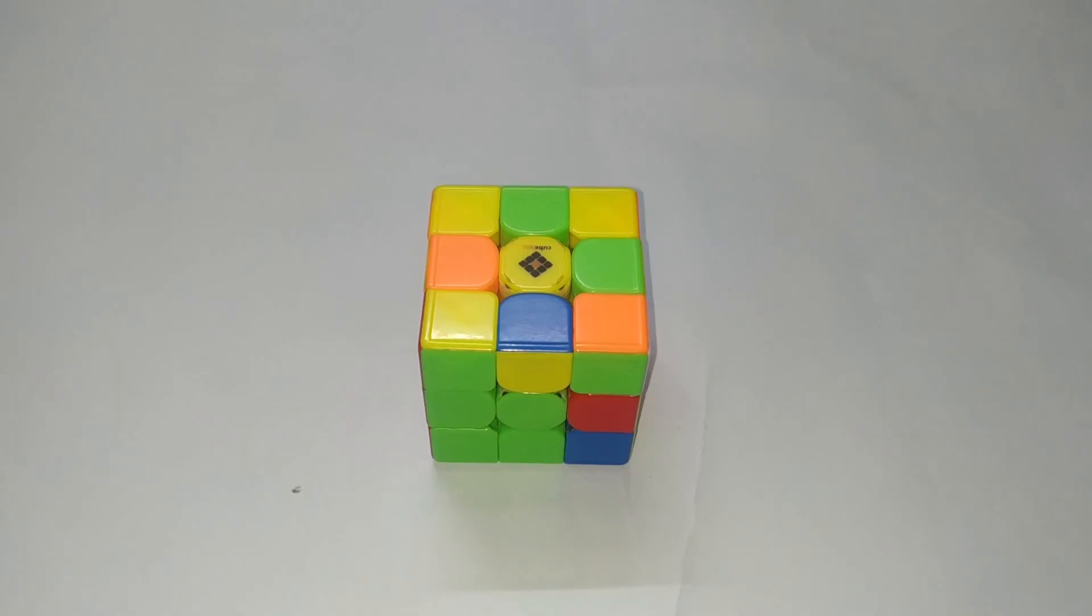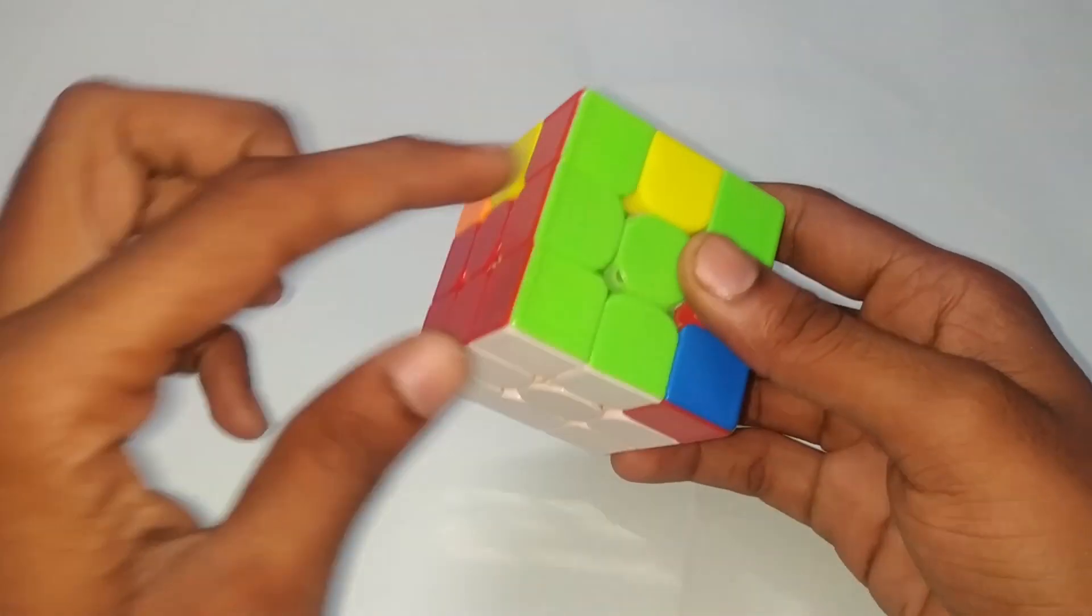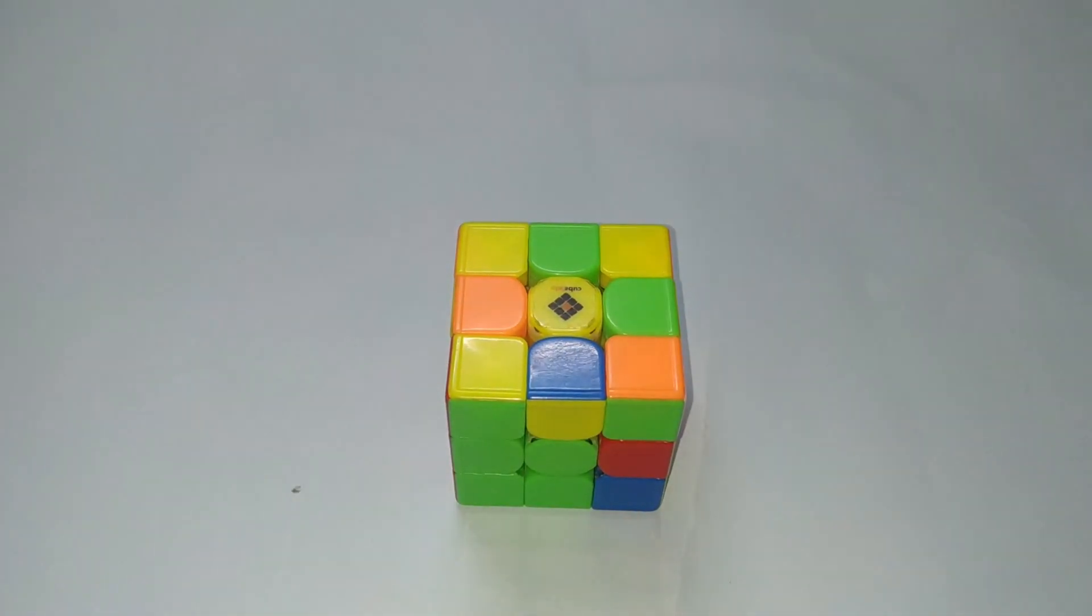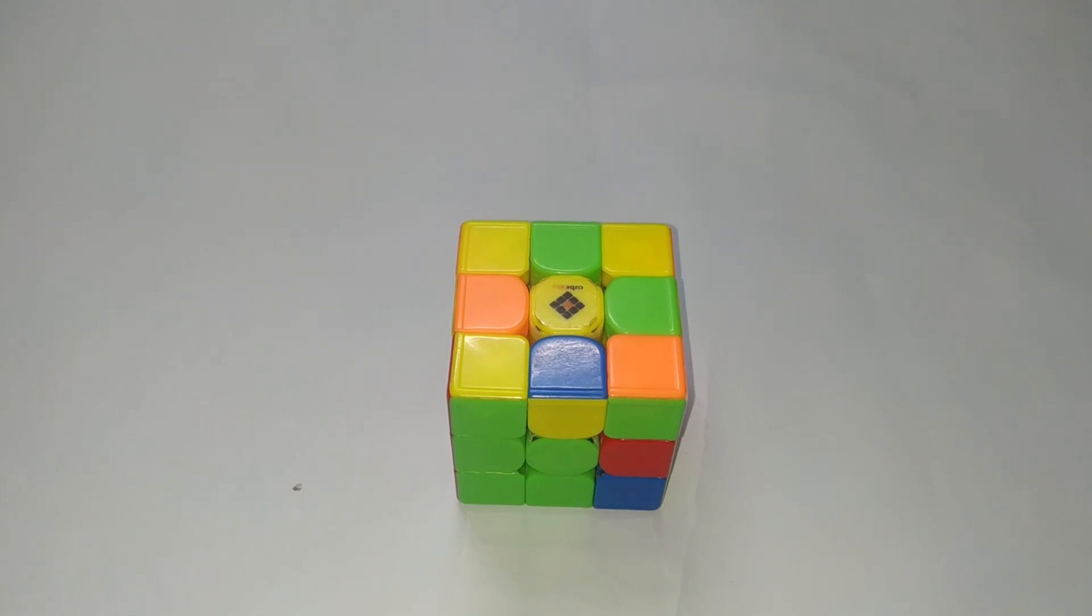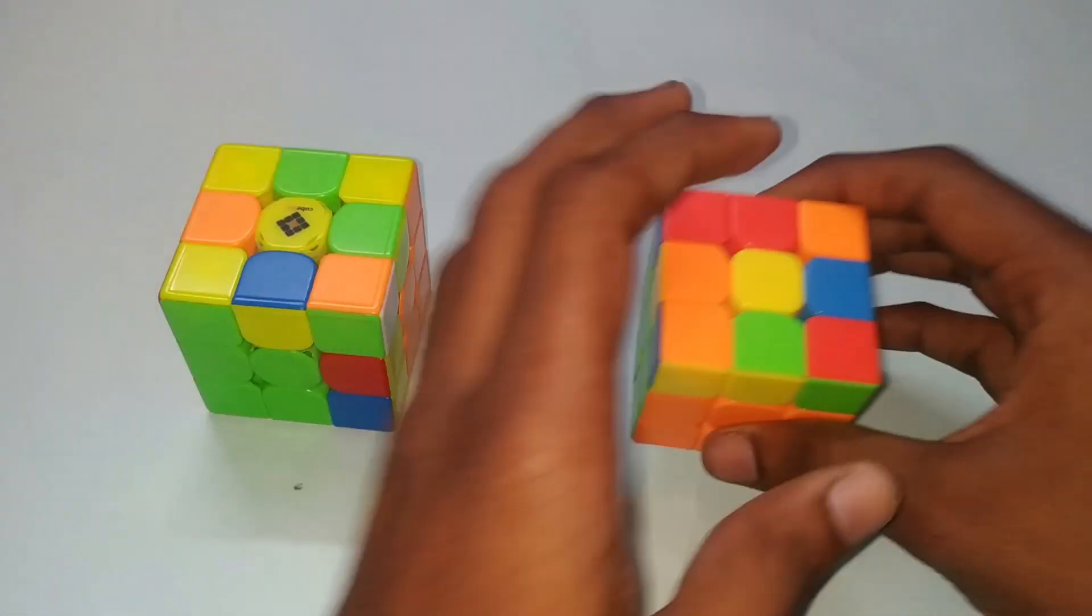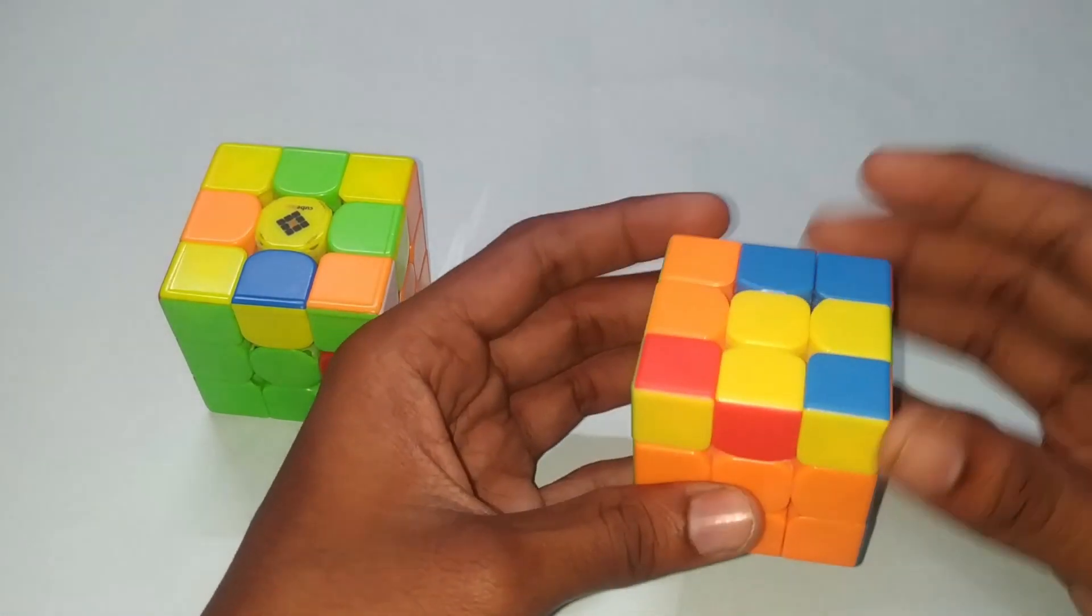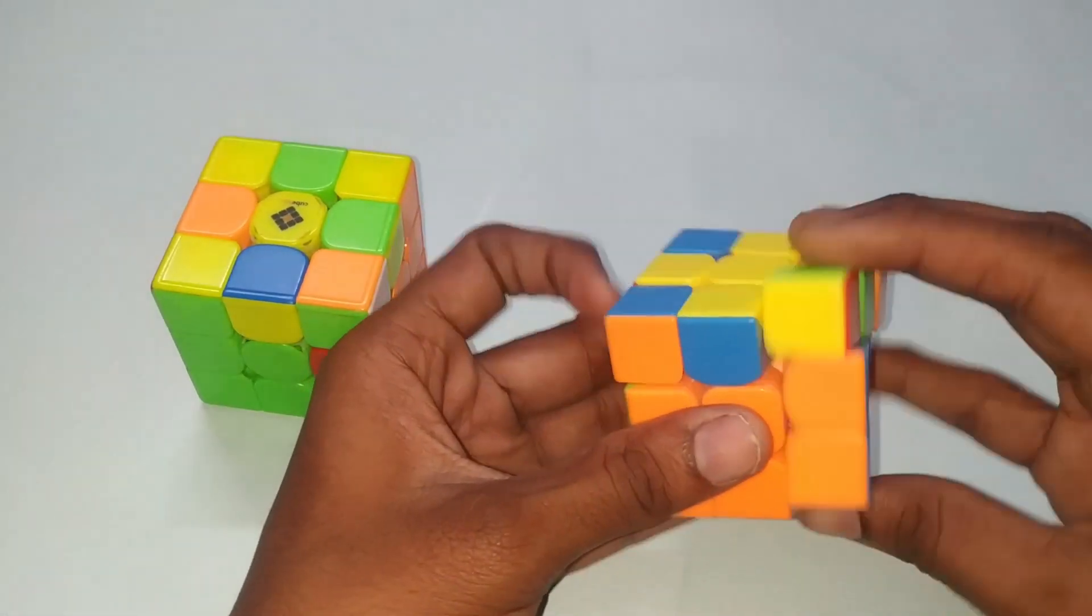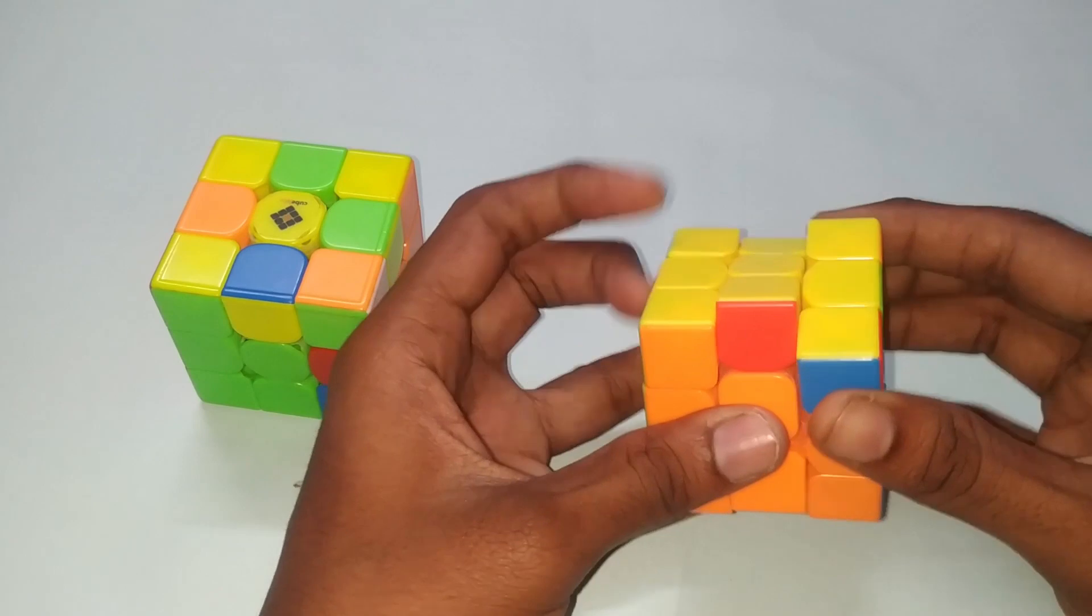If you want to solve F2L, you can insert all the pairs. Now I am using this algorithm, so you can use the same algorithm. This is for beginner to intermediate solvers. If you have a dot OLL case, I am saying that I have to make the L cross, then I have to orient the OLL.